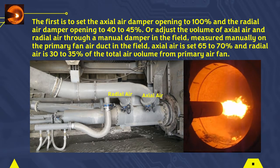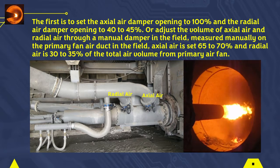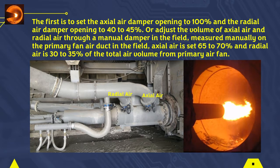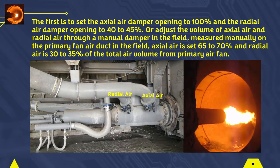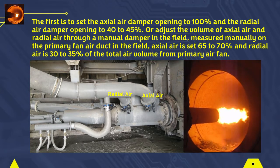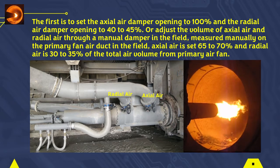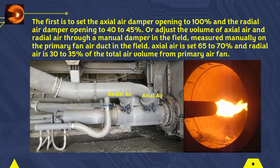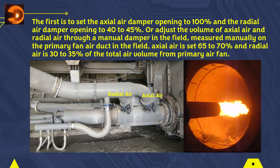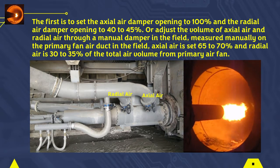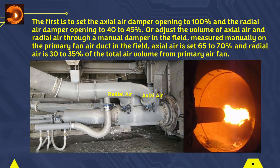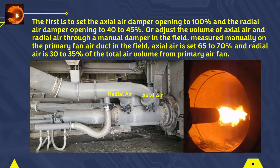Set the radial air damper opening to 40–45%. Or, adjust the volume of axial air and radial air through a manual damper in the field, measured manually on the primary fan air duct. Axial air is set to 65–70%, and radial air is 30–35% of the total air volume from the primary air fan.